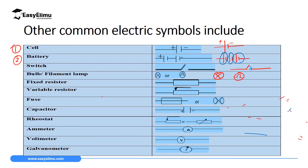Fixed resistors are devices that resist or regulate the amount of current flowing in a conductor. They are drawn as a rectangle with two connecting lines on either side. Variable resistors also regulate the amount of current in a conductor, but you can vary the extent at which they regulate — whether to restrict a large or small amount of current. A variable resistor is drawn just like a fixed resistor, but with an additional line with an arrow through it.